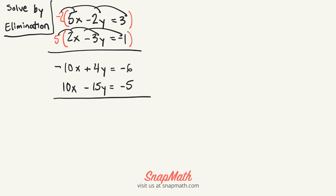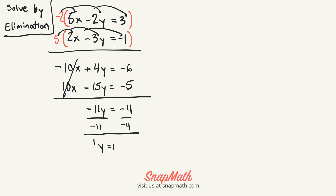So now, by doing that, I can eliminate my x's. And then I have negative 15y equals negative 11. Then divide by negative 15 on each side, and I end up with y equaling 1.